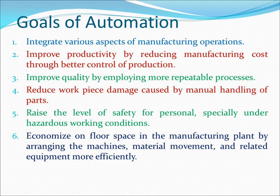The next goal is to economize on floor space in the manufacturing plant by arranging machines, material movement, and related equipment more efficiently. The plant planner has to economize floor space and arrange machines in a sequence that minimizes floor usage. When material moves from one place to another — or finished products move from the machine to inventory — this can be done easily with automation. The ultimate goal is to increase productivity and minimize floor space so that equipment can work more efficiently.